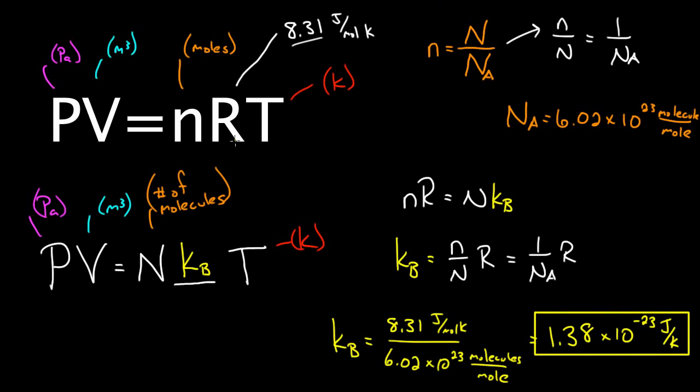Why do we care about Boltzmann's constant? Well, it allows us to write a more microscopically oriented version of the ideal gas law that focuses on number of molecules instead of number of moles. And this number pops up all over statistical and thermal mechanics. It's one of the most important constants in all of thermal physics.